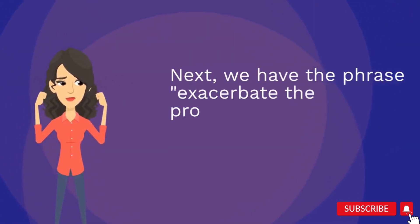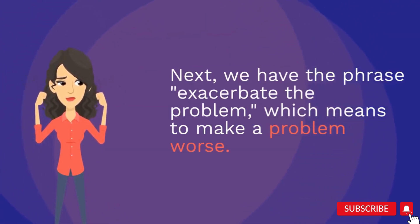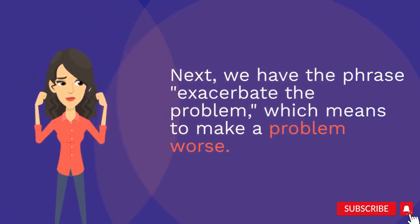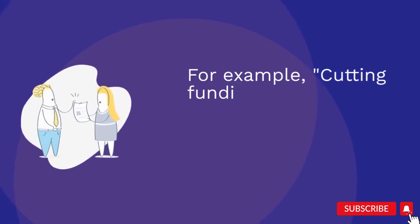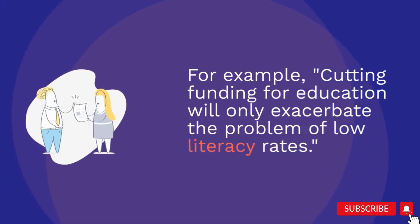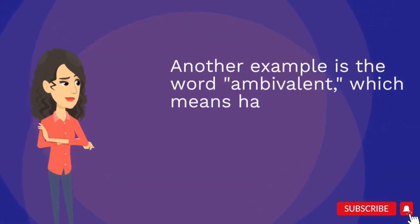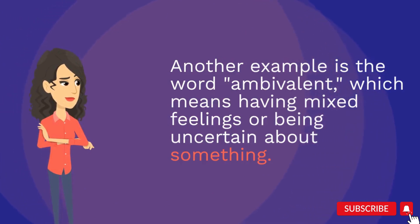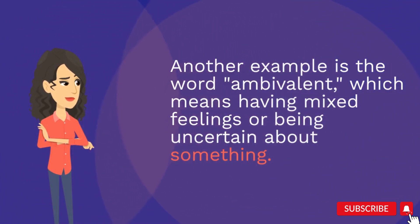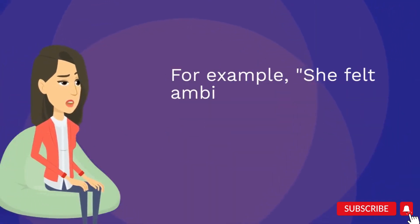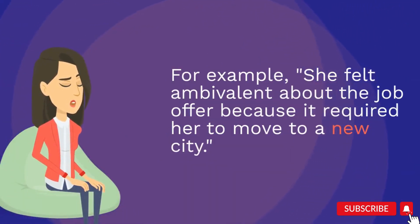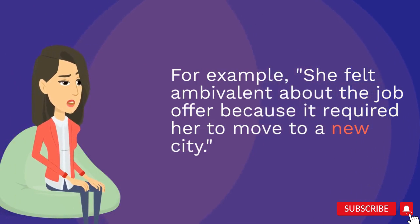Next, we have the phrase 'exacerbate the problem', which means to make a problem worse. For example: cutting funding for education will only exacerbate the problem of low literacy rates. Another example is the word 'ambivalent', which means having mixed feelings or being uncertain about something. For example: she felt ambivalent about the job offer because it required her to move to a new city.